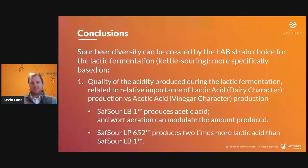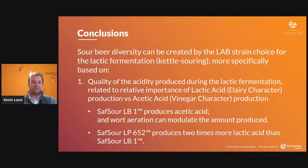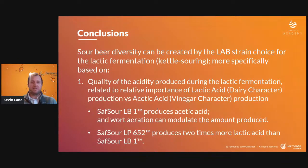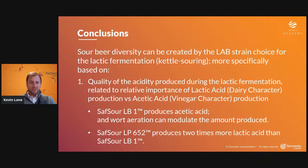These are the conclusions to this whole presentation. Sour beer diversity can be created by the lactic acid bacteria strain choice for kettle souring, specifically based on the quality of acid produced during lactic fermentation: lactic acid being a dairy character, and with the brevis, acetic acid production giving more of a vinegar character moving through fermentation.